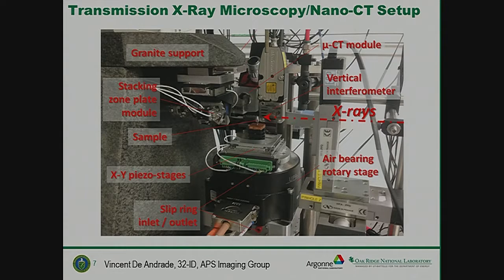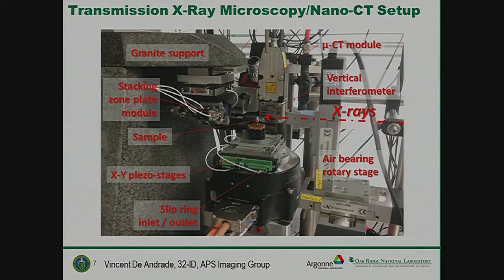This is the real design of the transmission x-ray microscope at the APS 32 beamline. X-rays come in from this side, pass through the condenser, and hit the sample. After the sample we have the zone plate, followed by the phase ring, and then far downstream in this direction we have the detector.